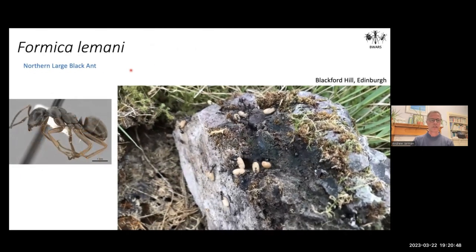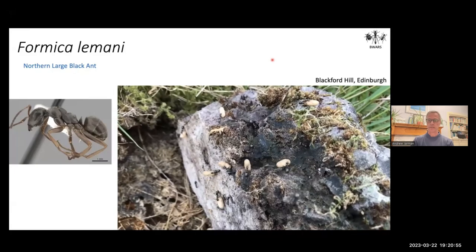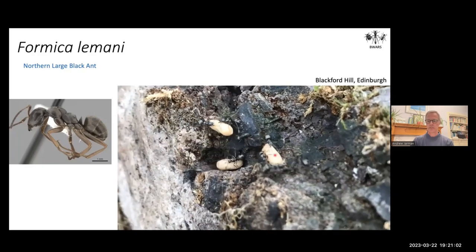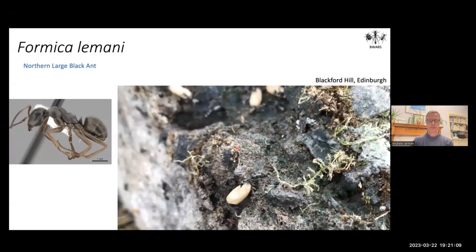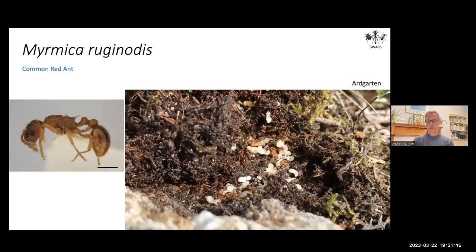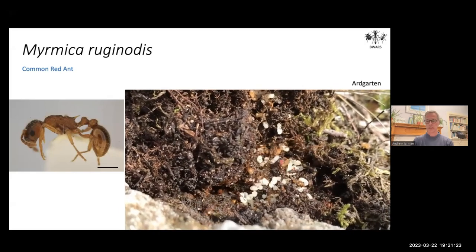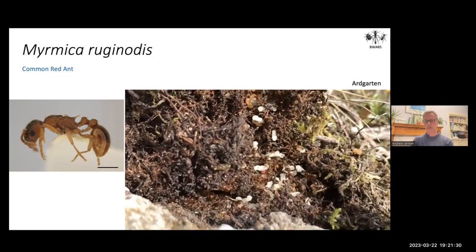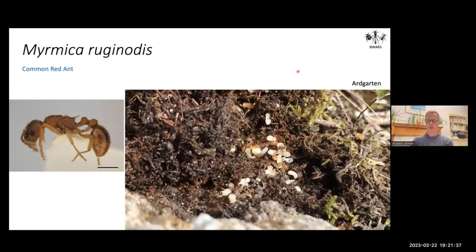Here is Formica lemani, the northern large black ant, typically nesting under a stone on Blackford Hill in Edinburgh. You can see the cocoons — the pupae in this species are enclosed in cocoons. It's quite a large, rapidly moving species. And here is Myrmica ruginodis, the common red ant, living in a wide variety of locations including quite cold and exposed moorland. It's generally quite bright red. The pupae here are naked — you can actually see the outlines of the pupae — quite a difference between the two species.